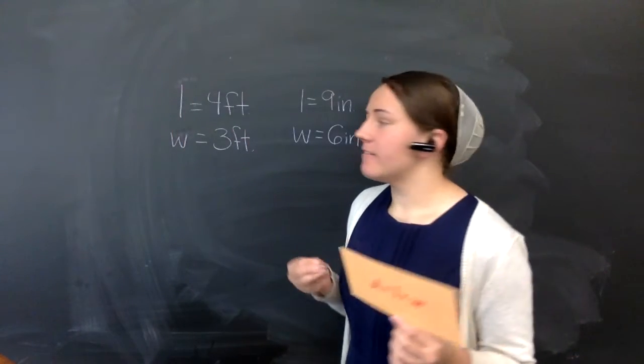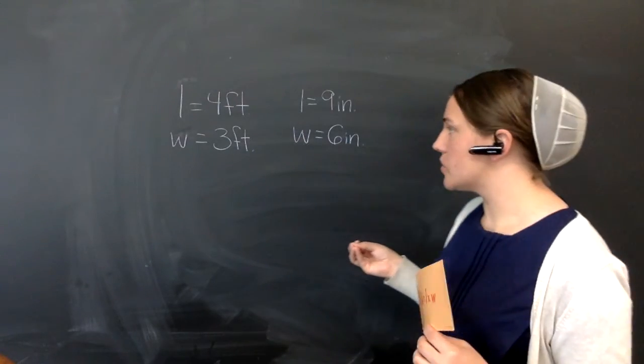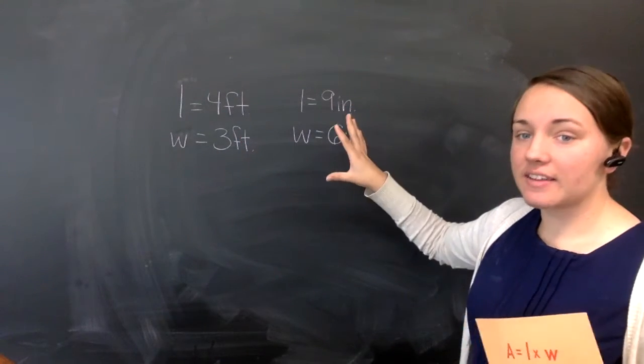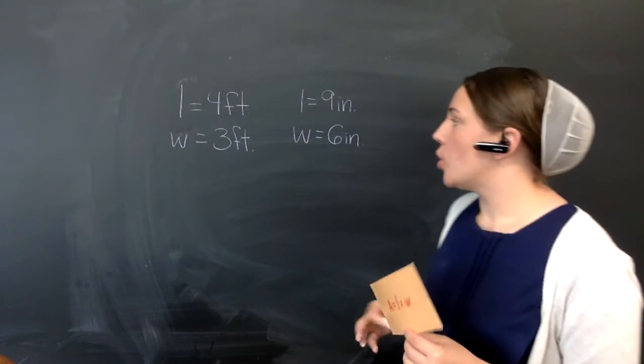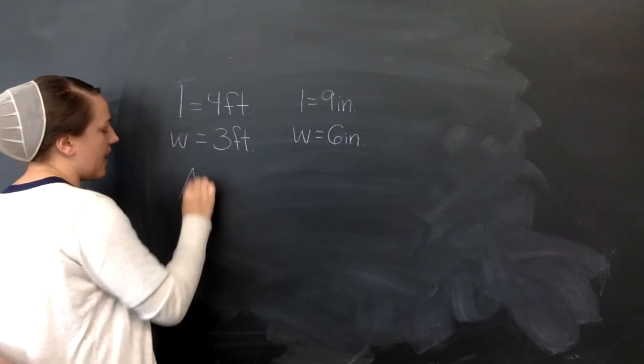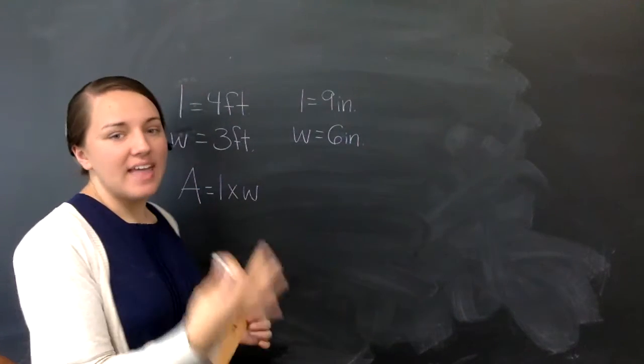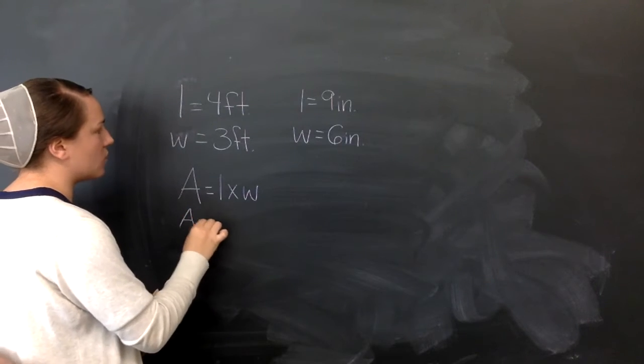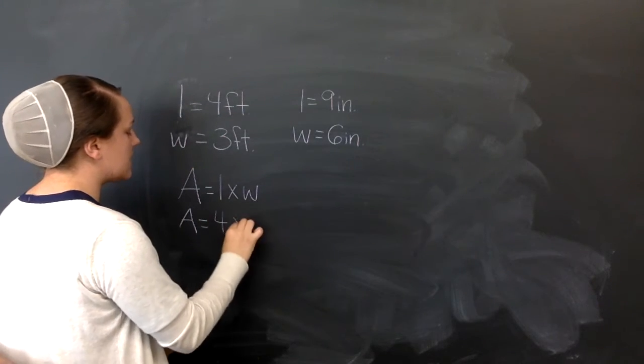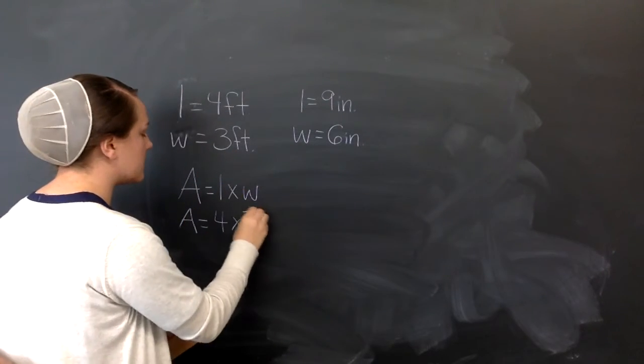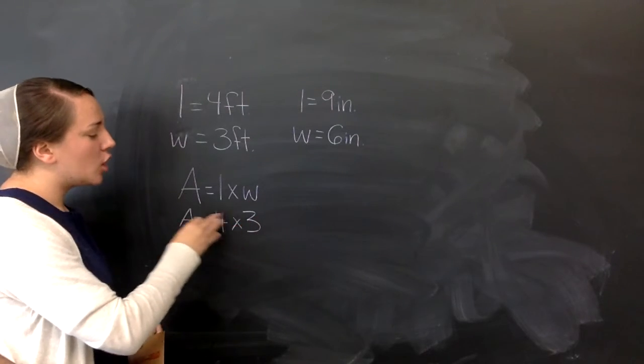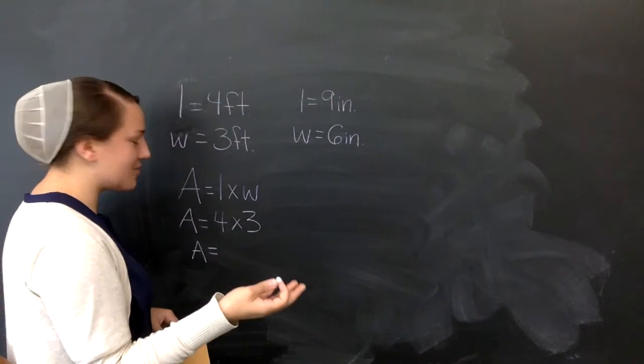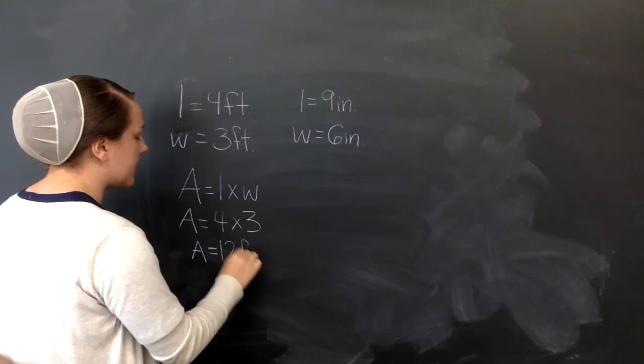So let's go ahead and work this. I have two sets of dimensions here for two different rectangles. The first one has a length of 4 feet and the width, a width of 3 feet. The second one has a length of 9 inches and a width of 6 inches. So let's go ahead and write this down. We have area equals length times width. That is our formula. Whenever you want to find the area of a rectangle, that is what you should use. So now we have area equals 4 is our length, 4 feet, times 3 is our width, 3 feet. So just copy that down. After you write your formula, go ahead and copy it and put your numbers in in place of the letters. And then figure out your answer. 4 times 3 equals 12. So our answer is 12.